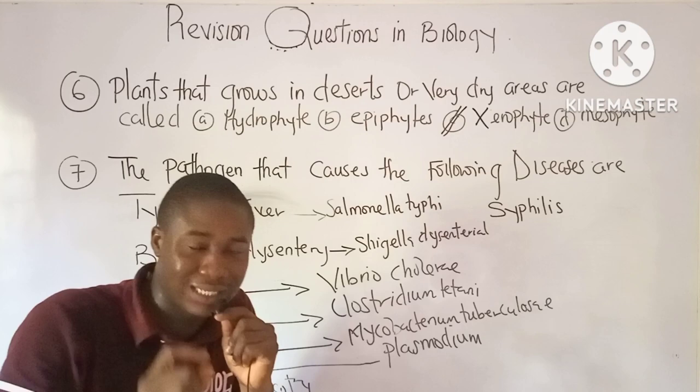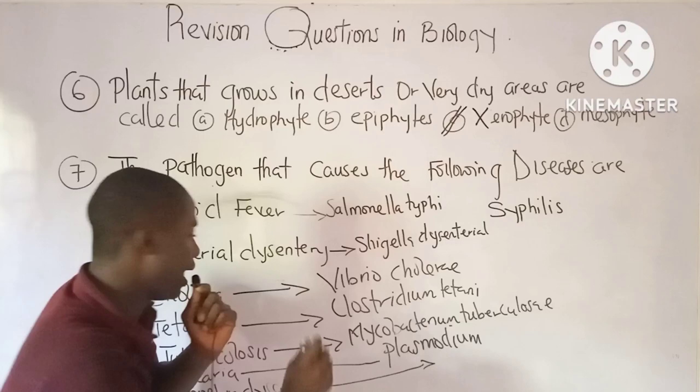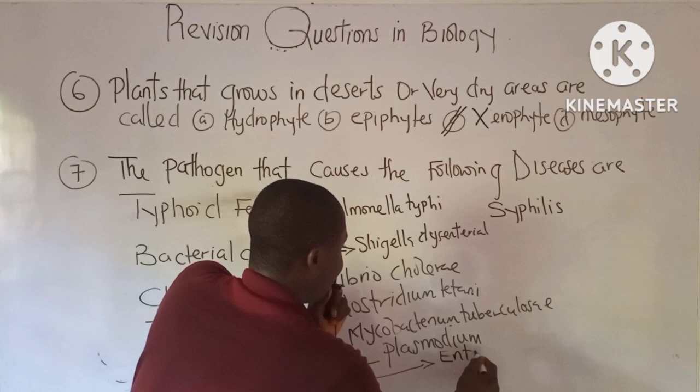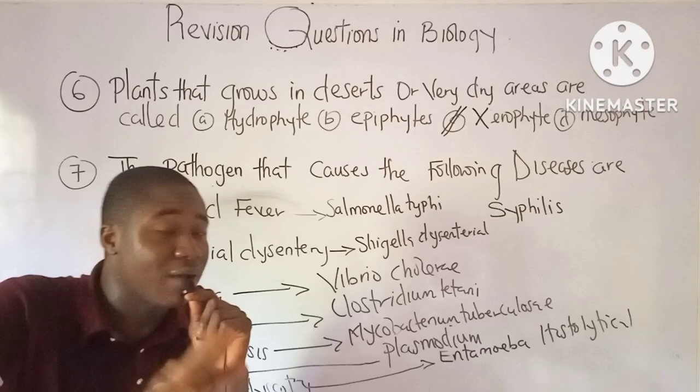Amoebic dysentery is another form of dysentery, distinct from bacterial dysentery. It is caused by a parasitic amoeba called Entamoeba histolytica. There are also free-living amoeba, such as Amoeba gingivalis.